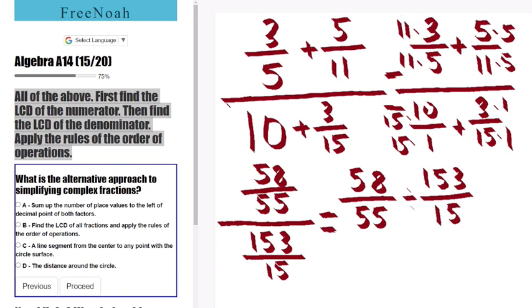Let's flip the second fraction and change the division into multiplication and start simplifying. So 58/55 times 15/153. We can simplify 15 and 55 by 5. 15 divided by 5, well that'll give us 3. Cross out the 15 here.